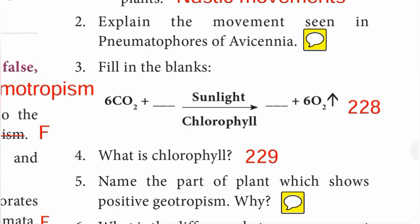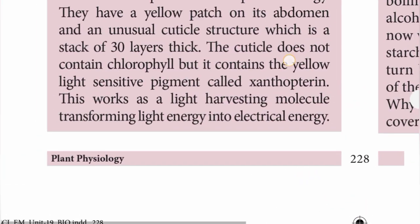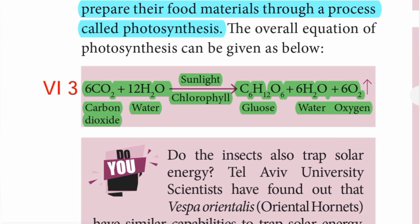Third one: fill in the blanks - 6CO2 + 12H2O with sunlight and chlorophyll gives glucose C6H12O6 + 6H2O + 6O2. So the blanks are 12H2O on the left side, and glucose C6H12O6 plus 6H2O plus 6O2 on the right side.